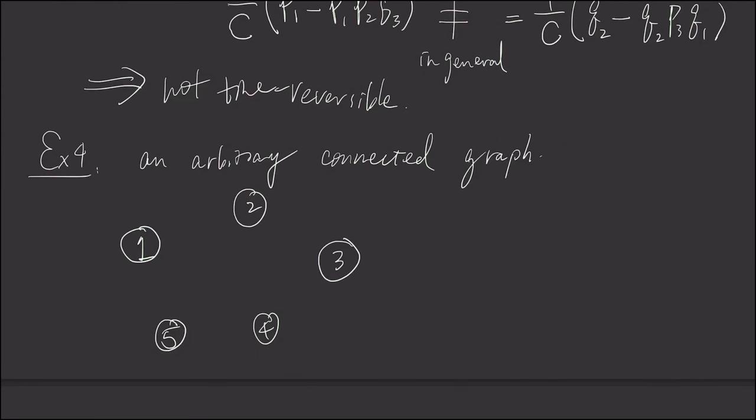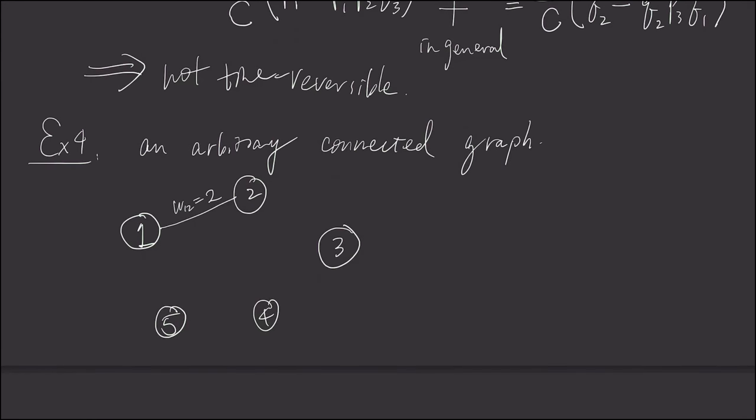And between each node, there is an edge which has no direction. For example, node one and two is connected. And there is a weight associated with an edge. For example, this is W12 equals 2. And we have, this is W15 is 2. Now we have, this is 1, this is 4, and this is 6.